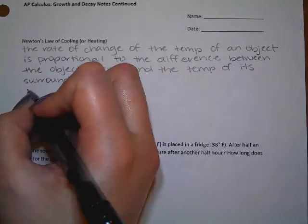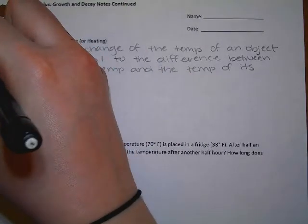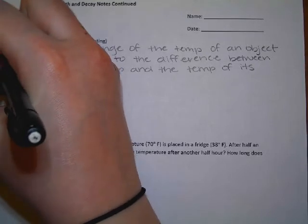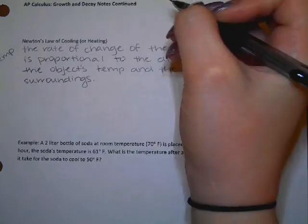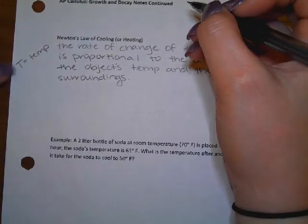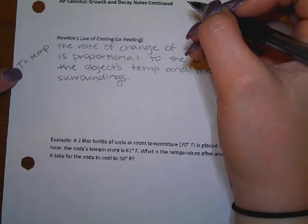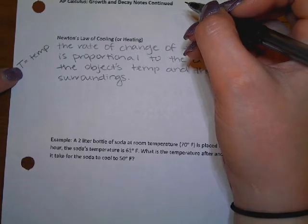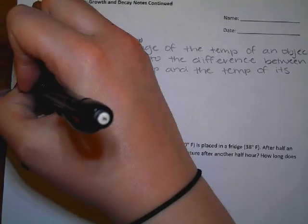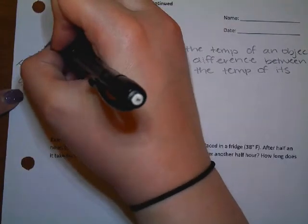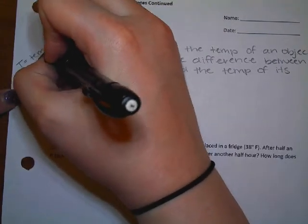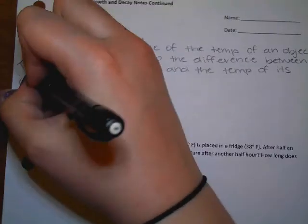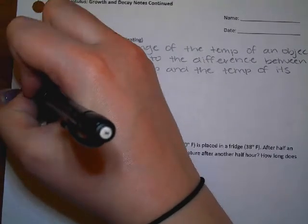Okay, so off to the side, go ahead and write capital T is going to be the temperature, and this is a function of t. So capital T is going to be temperature, lowercase t is going to be time. Temperature in terms of time. S, and that's the temperature of the object. S is going to be the temperature of the surroundings.